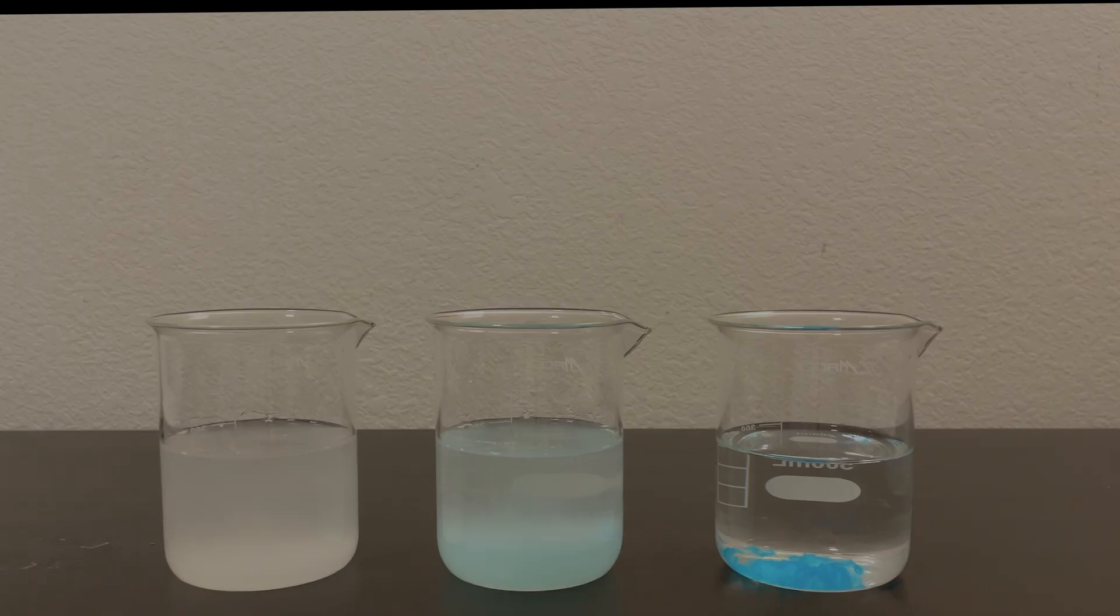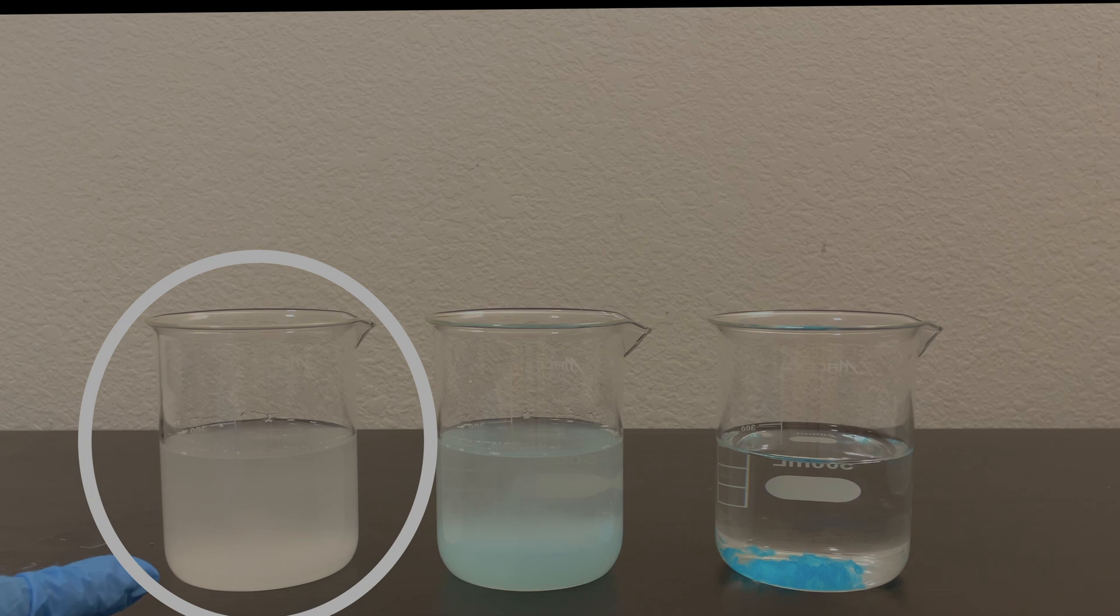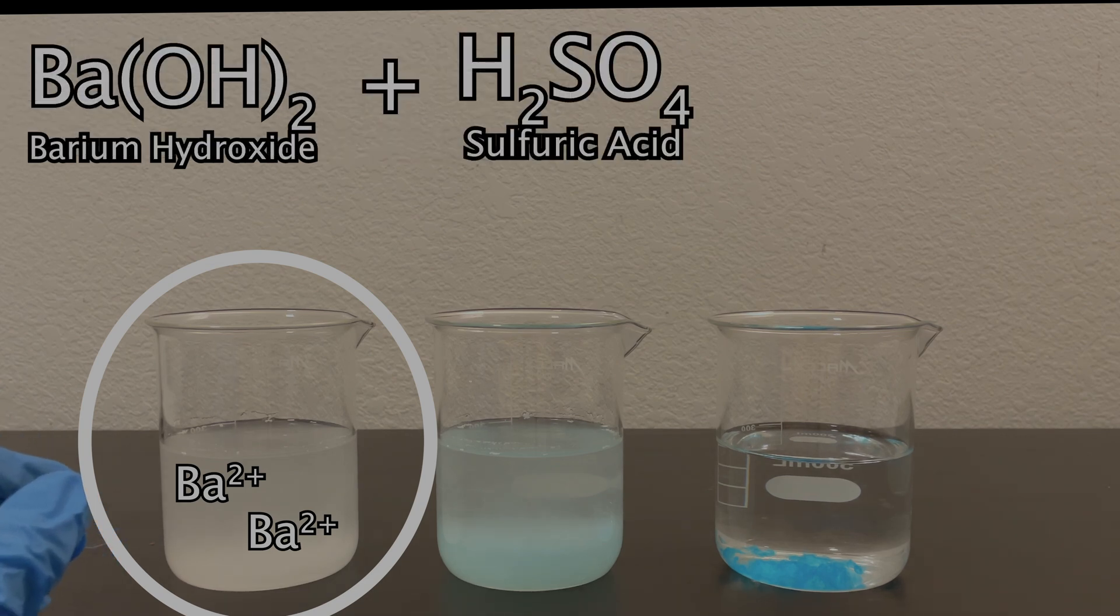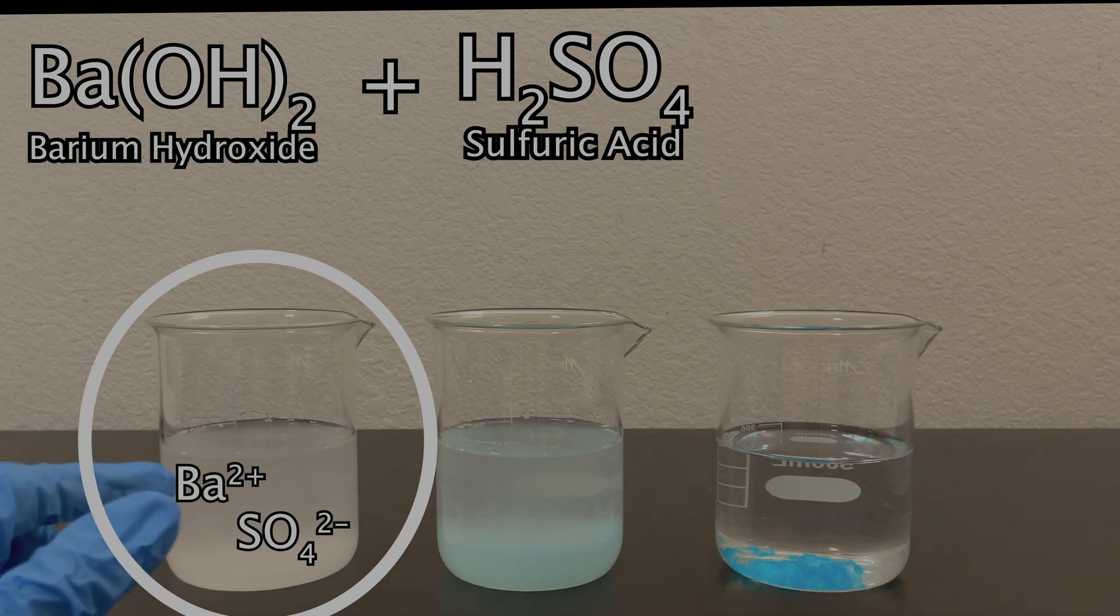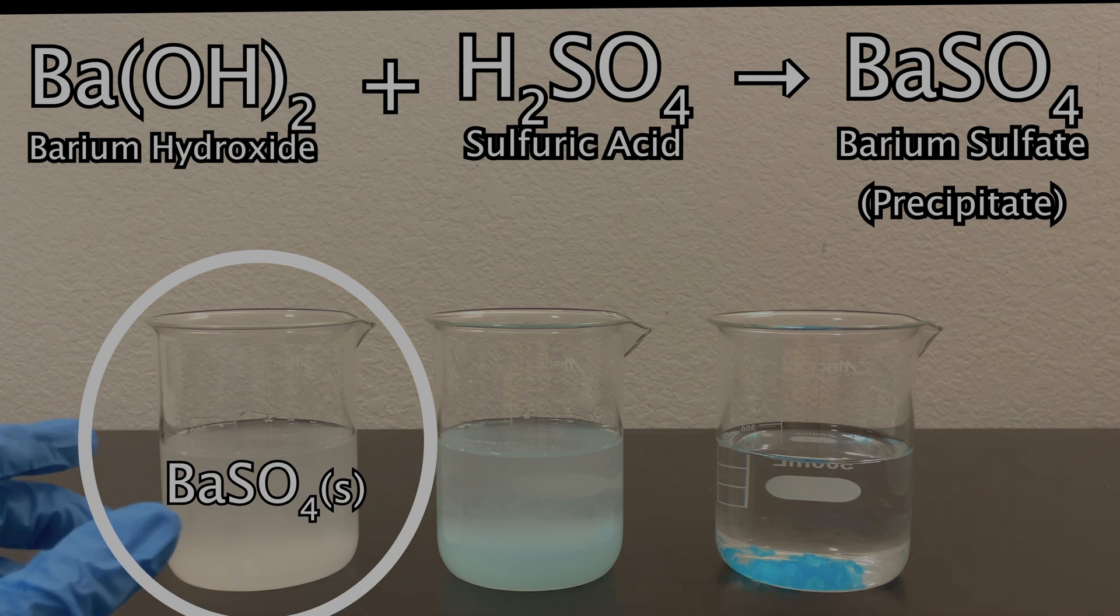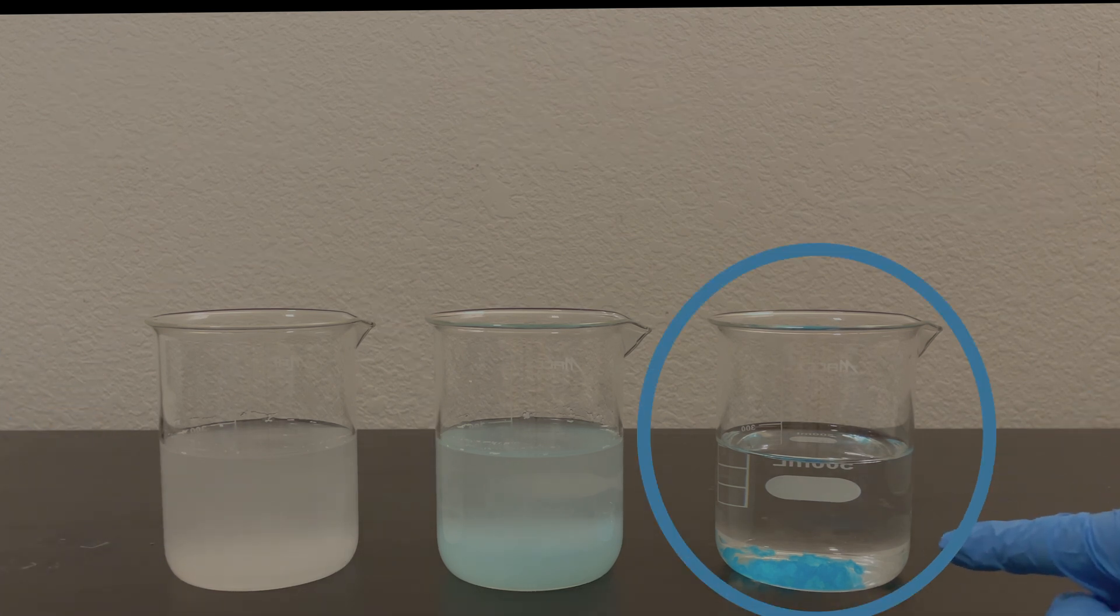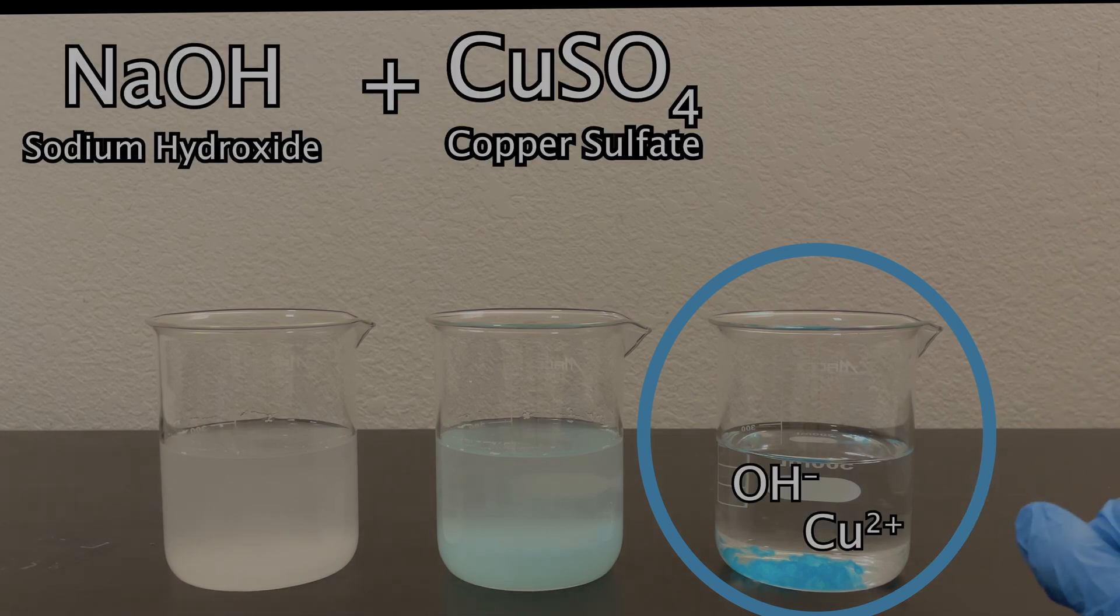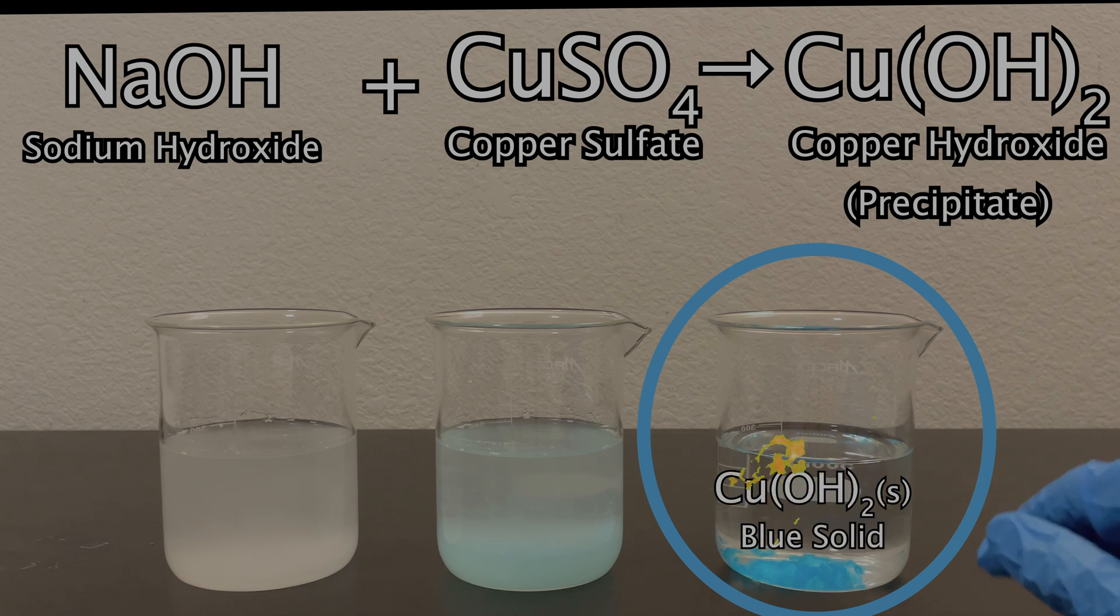What happened here is that in the leftmost beaker, I started with a solution of barium hydroxide containing barium two plus ions, and then added sulfuric acid, which contains the sulfate ion. Together, they formed the insoluble barium sulfate compound, which is a white solid. On the right, I started with sodium hydroxide and added copper sulfate, which forms the blue copper hydroxide precipitate.